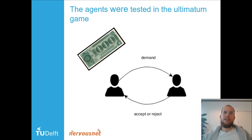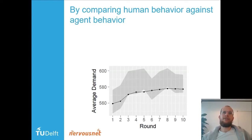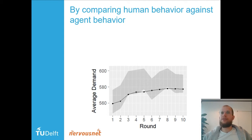What do the agents do? We tried to simulate them and compared human behavior against agent behavior. You see a graph showing the average demand — how many dollars people on average give away. On the x-axis are the rounds, as we simulated multiple rounds.